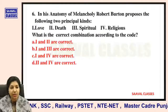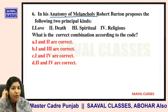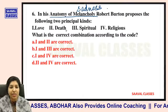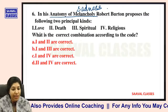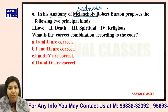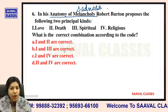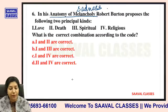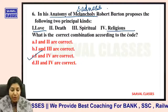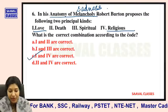Question number six: In his Anatomy of Melancholy, Robert Burton proposes the following two principal kinds — sadness related to love, sadness related to death, sadness related to spirituality, or sadness related to religion. The correct combination is one and four — he talks about Melancholy related to love and Melancholy related to religion.